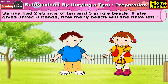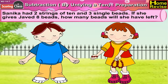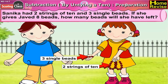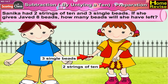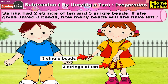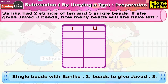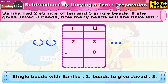Sonika has two strings of ten and three single beads. If she gives Javed eight beads, how many beads will she have left? Single beads with Sonika: three. Beads to give Javed: eight.